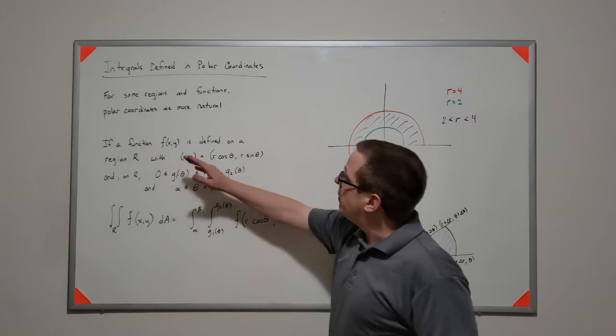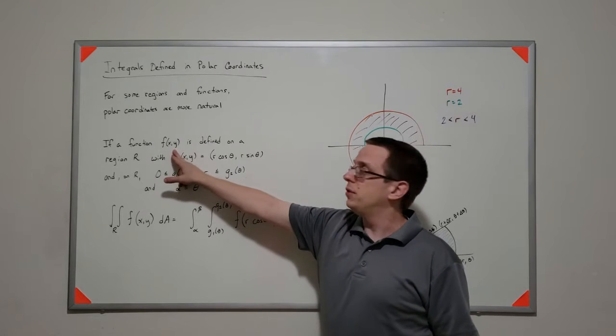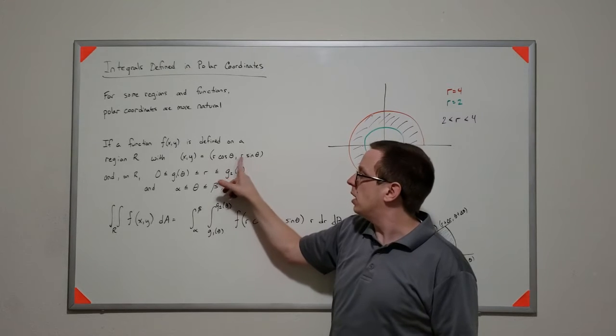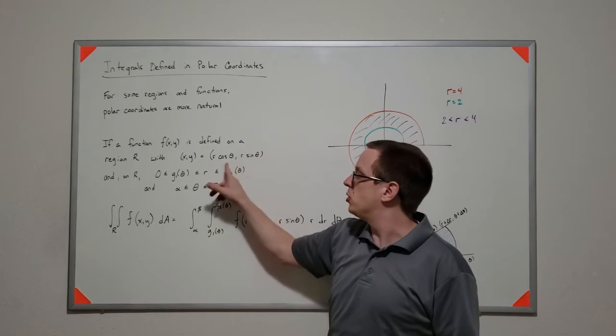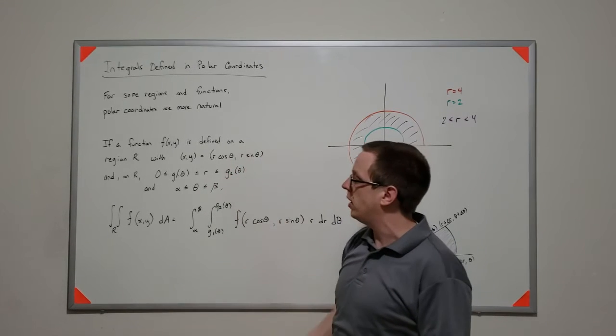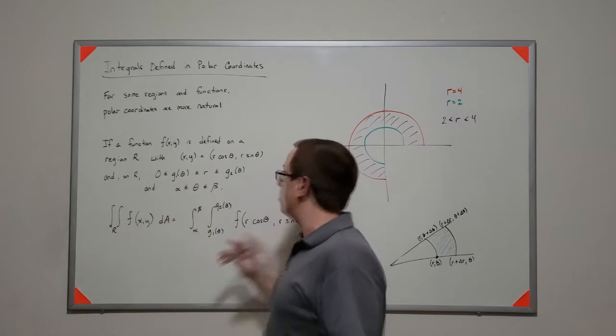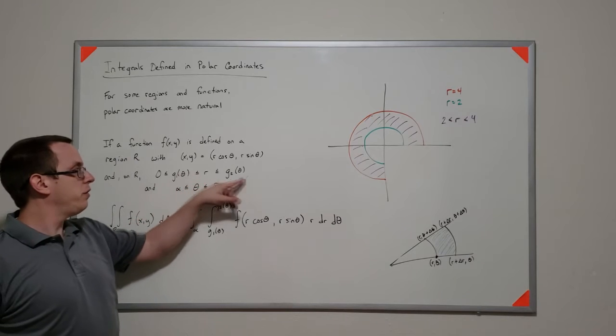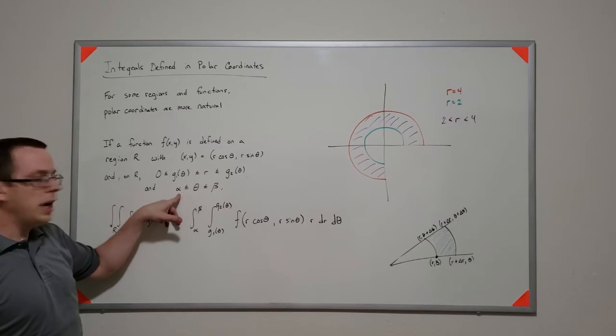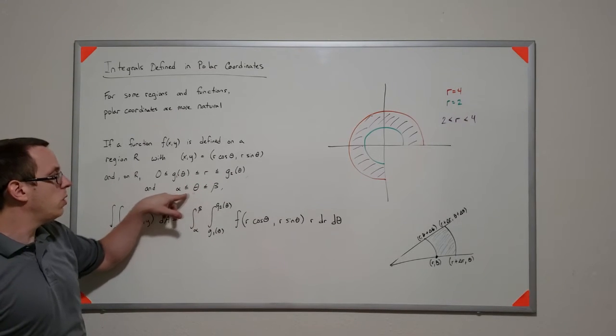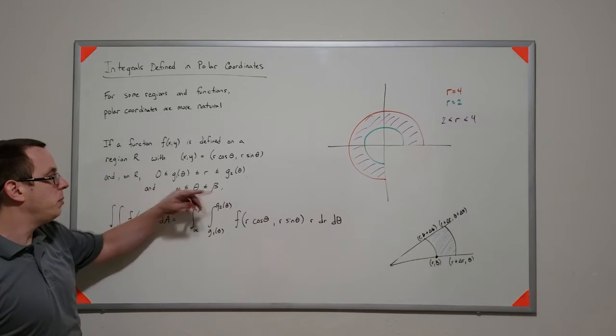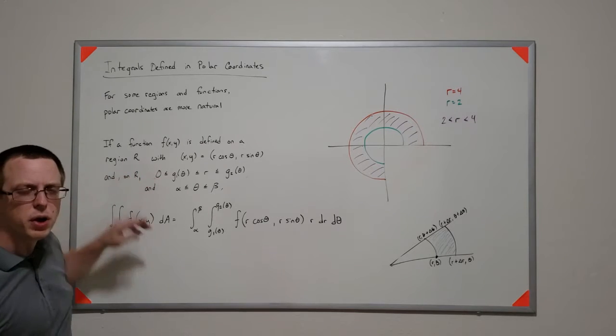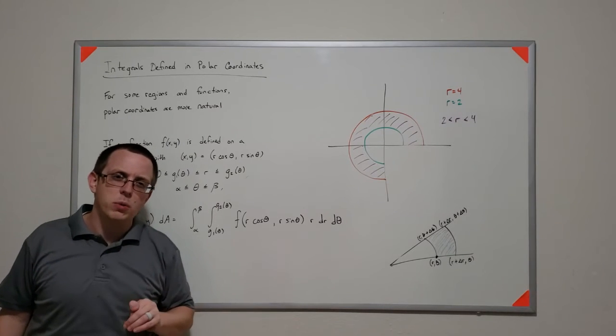So what we have is if I have some sort of function f, and it has the natural polar coordinate types of definitions, right, r cosine theta, r sine theta. And then on that region, so think of like this region, I can write r as a function of theta, and I know that theta goes from some starting point to some ending point. It's also important to note that in this case, r has to be positive. We can't have those negative r's like we deal with sometimes.